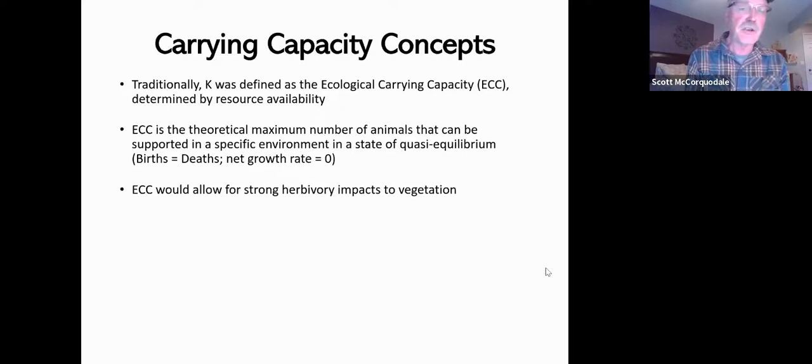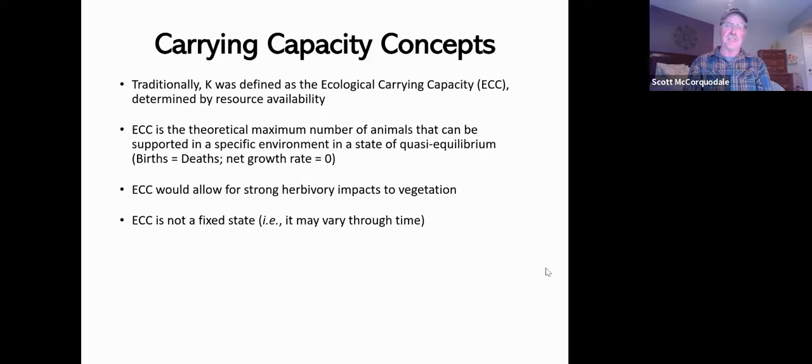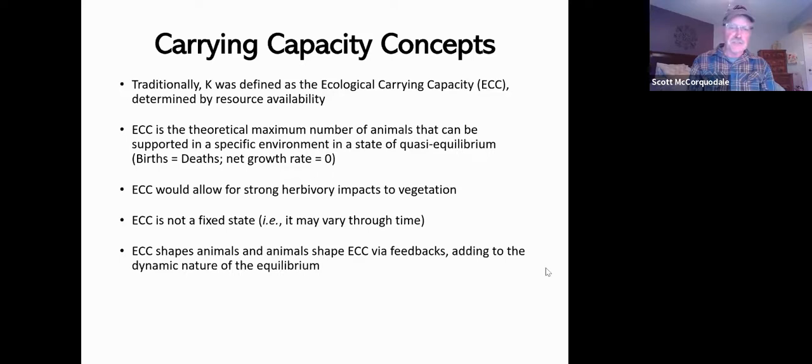Ecological carrying capacity does not prevent strong herbivory impacts to vegetation. At high density, the animals can actually degrade the habitat—they can impact the vegetative growth patterns of the forage plants and have essentially damage to the forage environment. It's not a fixed state; it varies seasonally almost always and can vary through time based on weather and climatic effects. There's this interesting relationship between the animals and ECC: ECC shapes the animals and the animals shape the ECC via feedbacks, and that adds to the dynamic nature of the equilibrium.